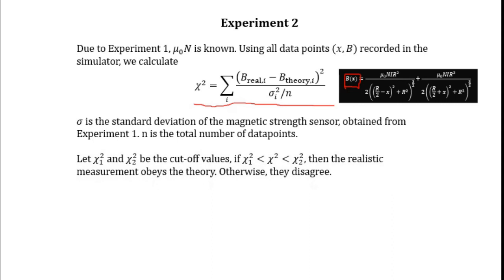Now we define χ₁² and χ₂² as the chi-squared cutoff values. Here, if your calculated chi-squared falls within these cutoff values, then the measured data obeys the theory. Otherwise, they disagree.